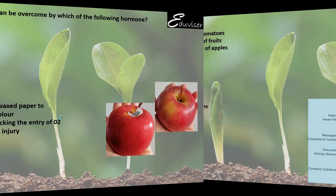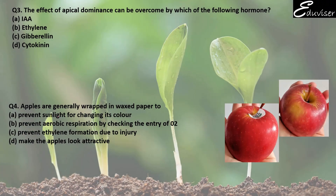Next, question number 3: The effect of apical dominance can be overcome by which of the following hormones? To overcome apical dominance means to find the antagonist of auxin, which is cytokinin. Cytokinin is antagonist to the action of auxin, and therefore it also overcomes that phenomenon.